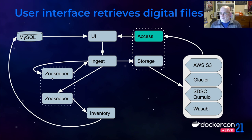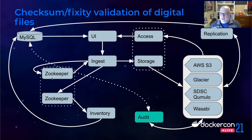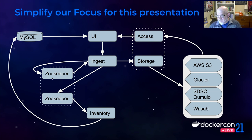This function is served by a specialized version of our storage microservice that we call our access microservice. After the primary node is saved, we replicate content to two additional copies. When replicating, in addition to Amazon S3, we also use Amazon Glacier as one of those possible replication locations. We continually check the integrity of content in the repository by performing checksum calculations on content in cloud storage, recording and verifying those results against our inventory database. For this presentation, I'll focus on our core microservices and how I assembled them as a Docker stack for testing purposes.